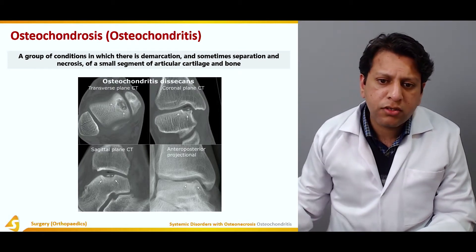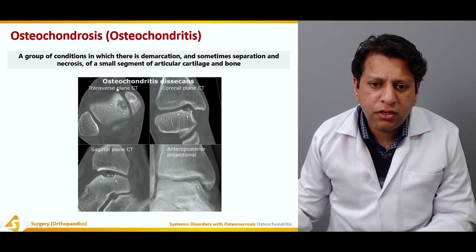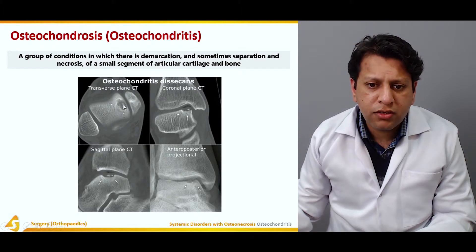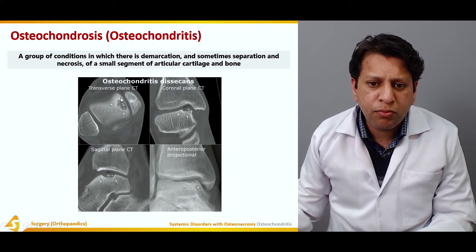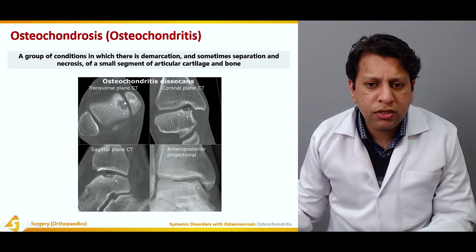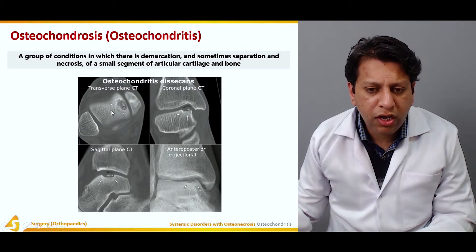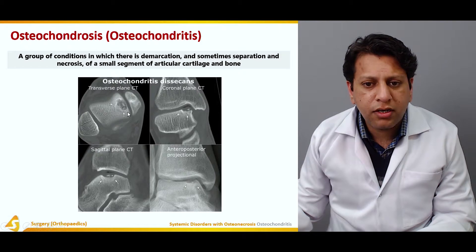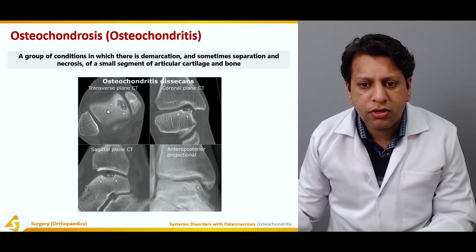This is a CT showing a transverse plane view, and if you see over here, this is the articular cartilage. The bones have actually necrosed and the articular cartilage has collapsed, resulting in osteochondritis.